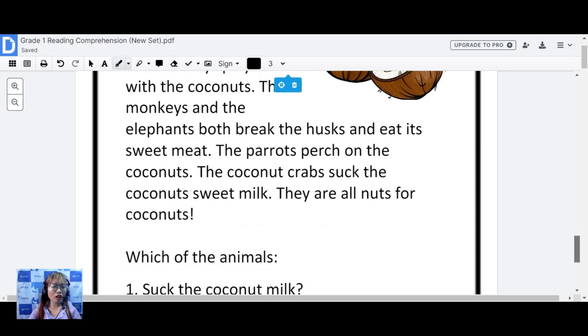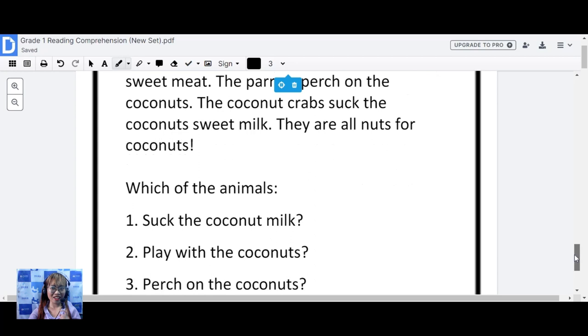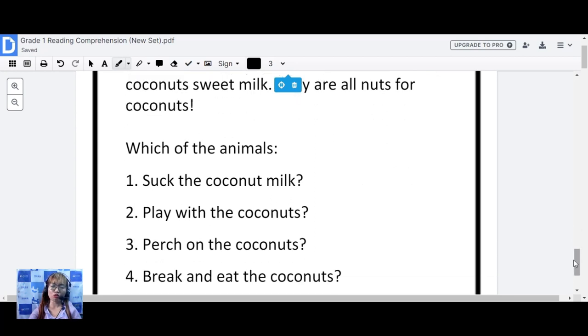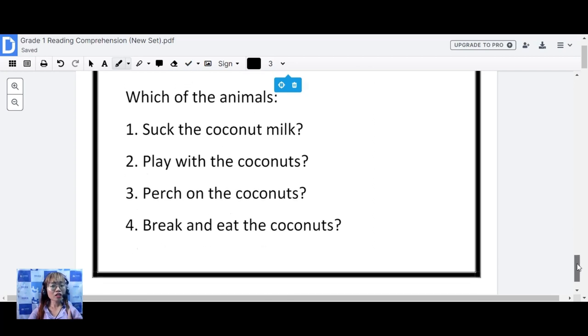They are all nuts for coconuts. Okay, the instruction. Which of the animals? Number one. Sucks the coconut milk. Who is that animal? Number two. Play with the coconuts. Number three. Perch on the coconuts. And the last one. Number four. Break and eat the coconuts. Who do you think?